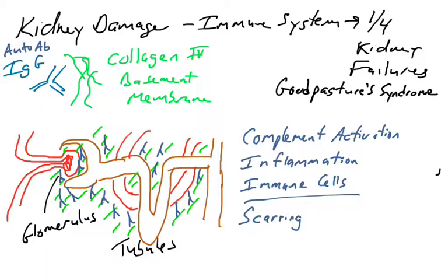And you eventually have scarring that takes place such that the filtration apparatus, the ability to move substances to and from the filtrate, becomes damaged. So processing of the blood, filtering of the blood, becomes impaired in individuals who have Goodpasture syndrome.